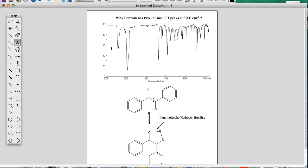And we said before that a primary amine would have two sharp peaks around 3200. However, in this case, it is not amine.